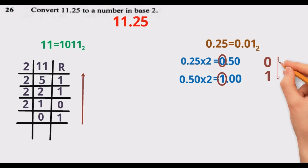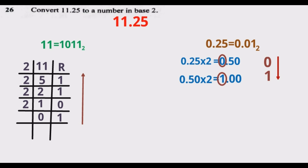As you may have noticed, when writing the answer for the decimal numbers, I start from the top coming down. For the whole number part, you write remainders from the last to the first. For the decimal places, you start from the top coming down. So the value of 0.25 in base 2 is 0.01.